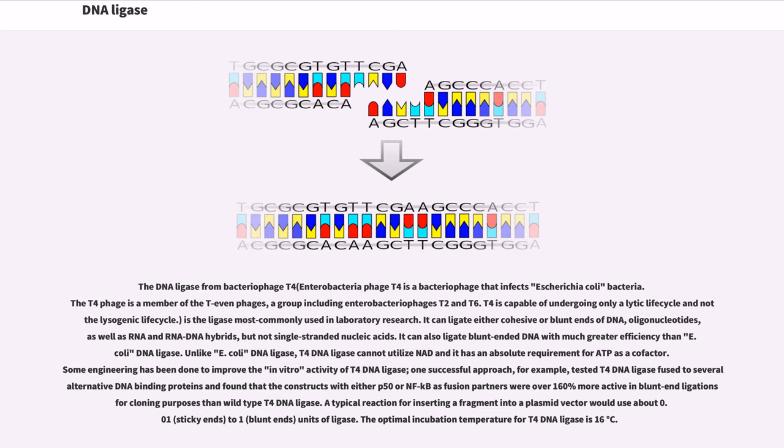A typical reaction for inserting a fragment into a plasmid vector would use about 0.01 units of ligase for sticky ends, to one unit for blunt ends.